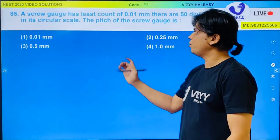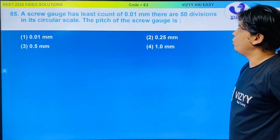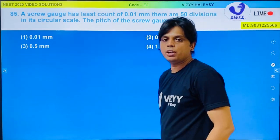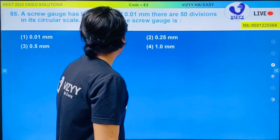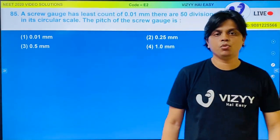Hello students, now next question is question number 85 from code E2 and it is of topic unit and measurement. It is a question of micrometer screw gauge and here in this question the pitch of screw gauge you need to find out.